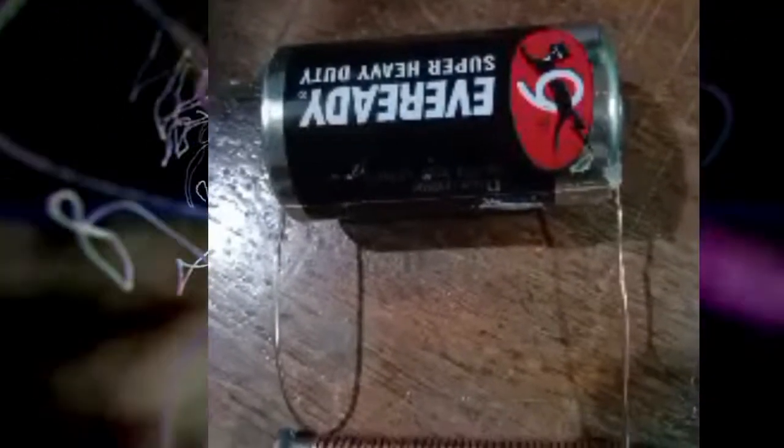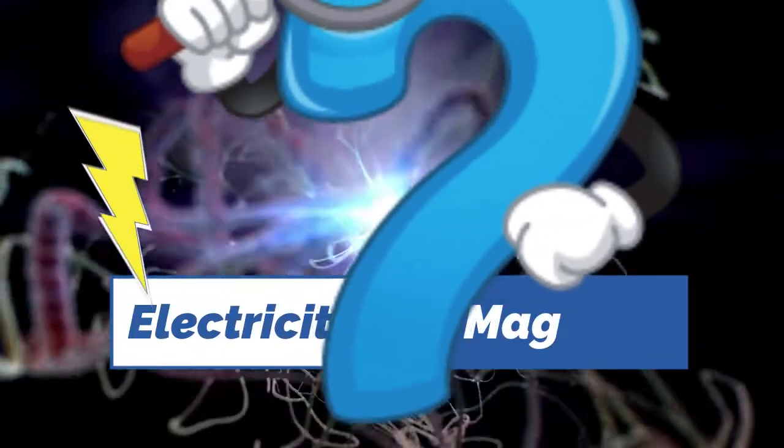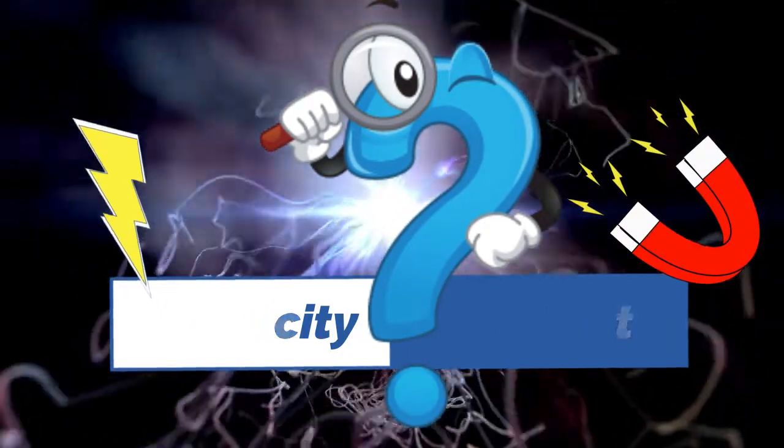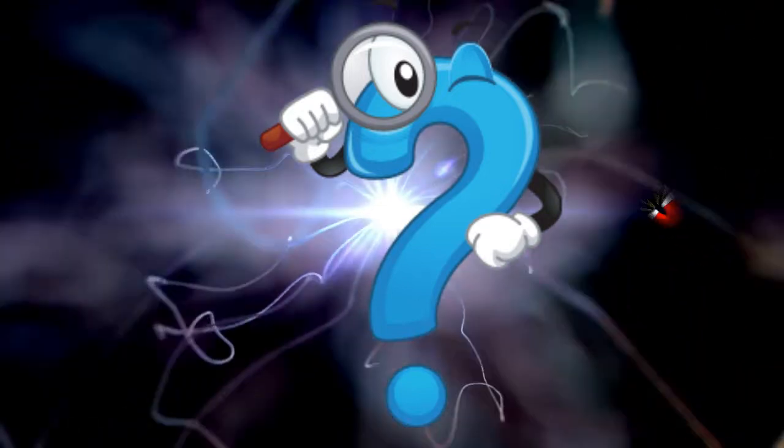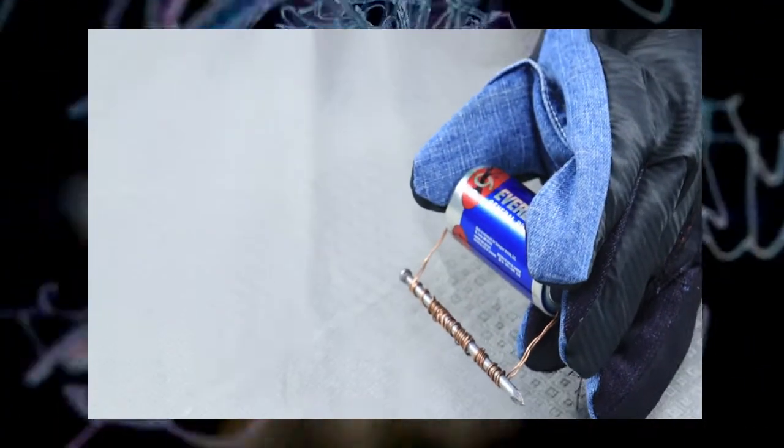You are now creating an electromagnet! Let us find out if electricity can be used to produce magnet. Then, let the current flow to the wire.